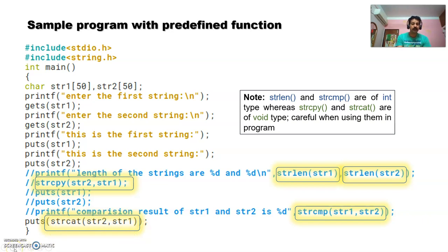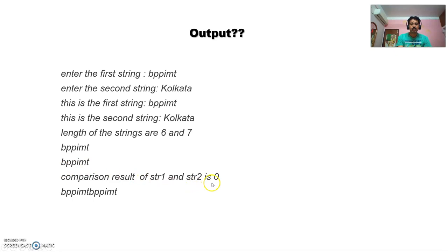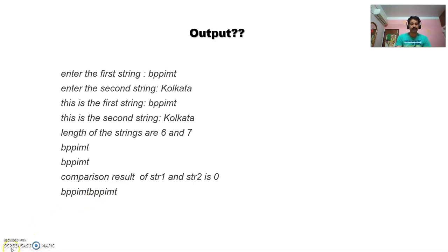Looking at the output: the first string entered is 'BPPMT', the second is 'Kolkata'. The sizes are 6 and 7 respectively. After strcpy(), str2 becomes 'BPPMT' and the comparison result is 0. After strcat(), the final result is 'BPPMT BPPMT'. So this program is straightforward. We have also displayed some other common functions like strncpy(), strncmp(), strupr(), and a few more.